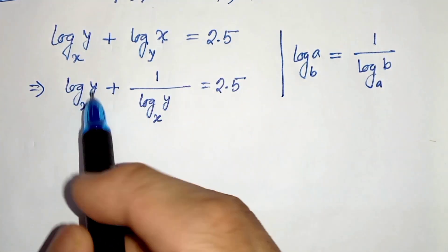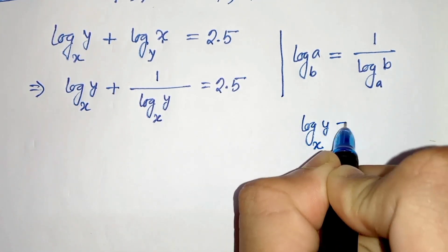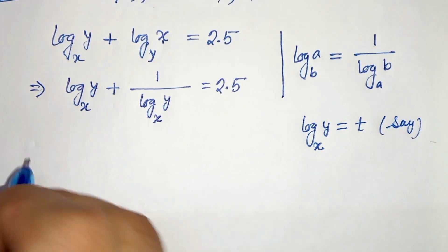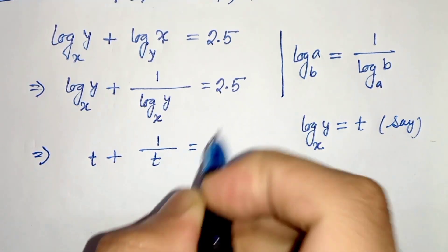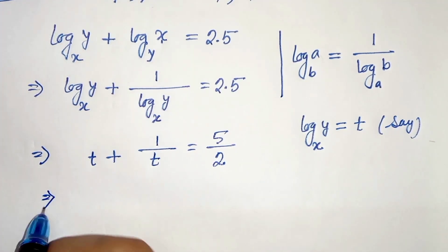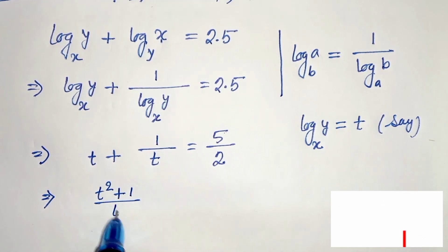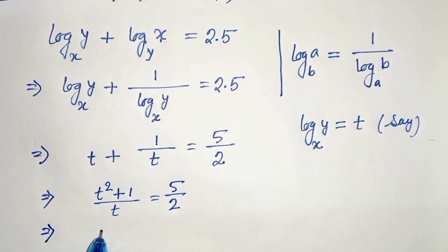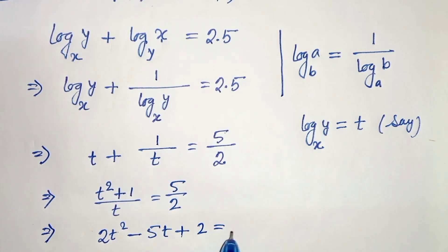Now we consider log of y base x as t. Replacing, we get t plus 1 over t equals 2.5, which can be written as 5 divided by 2. Taking the LCM, this becomes t squared plus 1 over t equals 5 over 2.